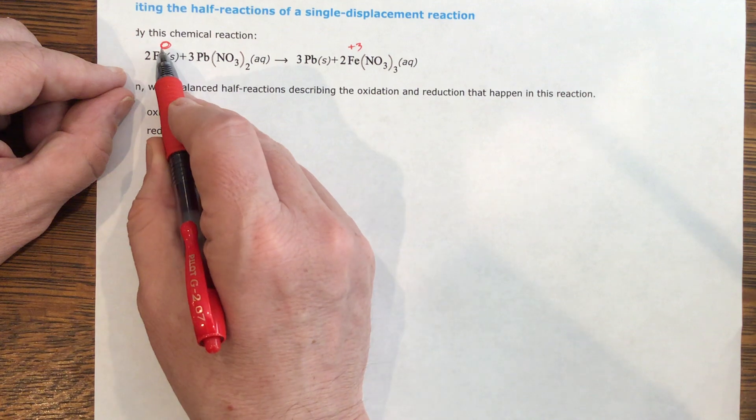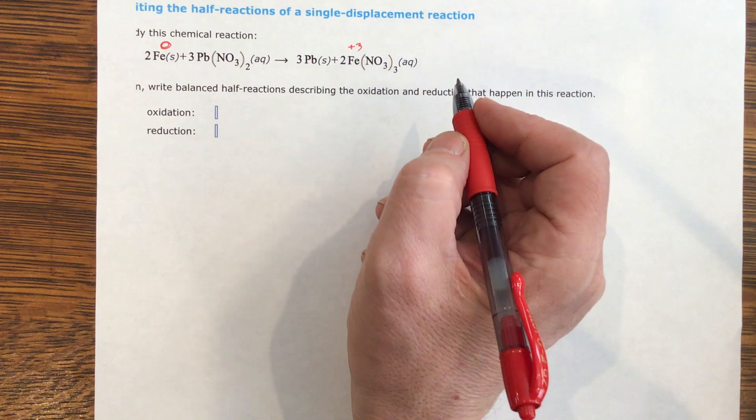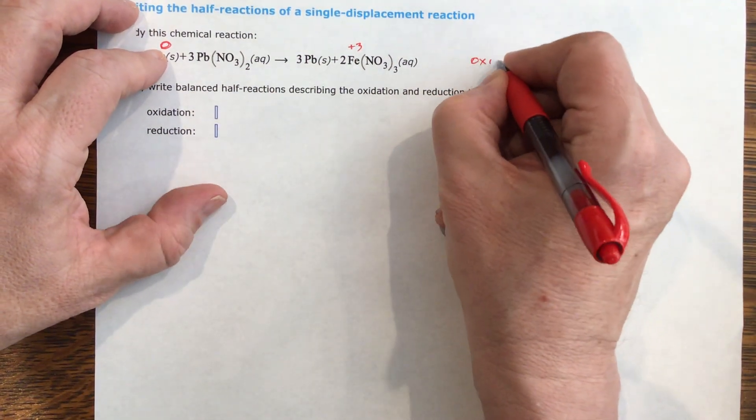So iron has gone from zero to positive three, and so that is oxidation. So oxidation is when it's gone up. So I'll put this to the side.